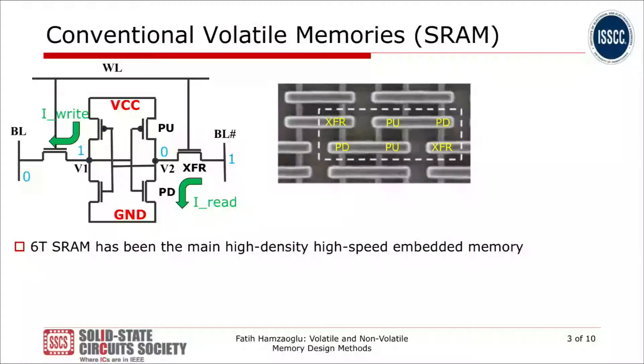Then we'll end with non-volatile memories. First, SRAM as a conventional memory. SRAM is six transistors, with two transfer gates and four transistors in the middle as a latch. It is fully embedded in CMOS technology, it is fast, and it has a very compact layout as you see here.